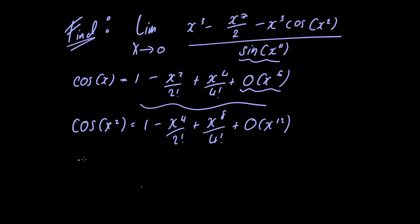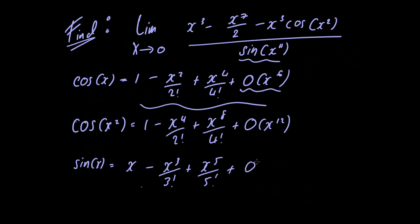We can rewrite sine of x as x minus x cubed divided by 3 factorial, plus x to the 5th power divided by 5 factorial, plus O of x to the 7th power.